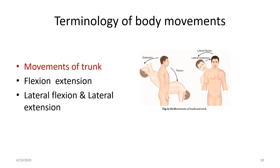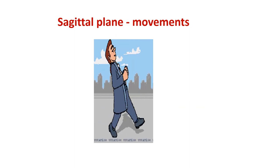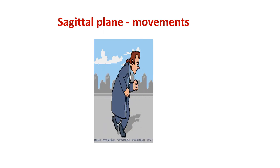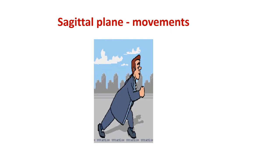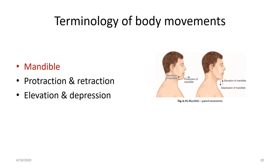In the case of the trunk, the movements are flexion — forward bending — and backward bending, which is extension from the anatomical position. Bending towards the sides is lateral flexion and lateral extension. The flexion is forward bending and backward bending is the extension of the trunk.